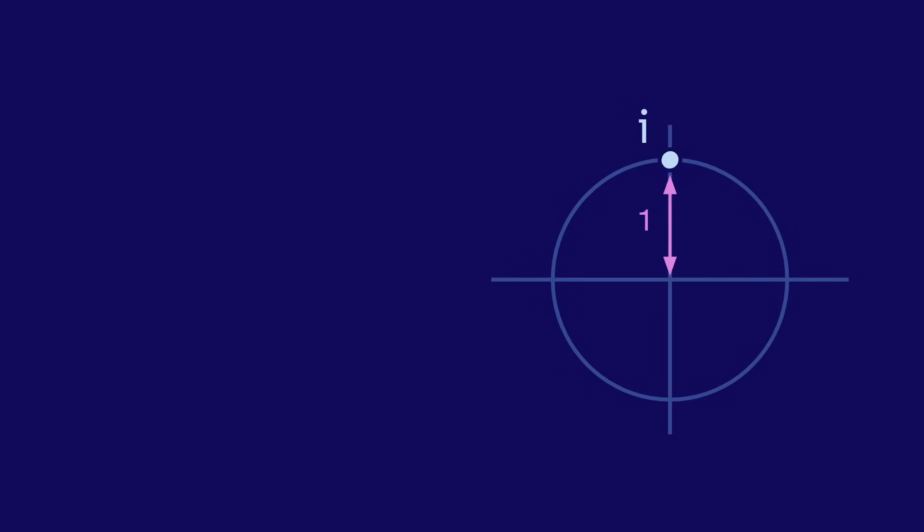I has radius 1, and on the first lap, it has angle pi over 2. So to calculate i to the i, we can replace the base with polar form, and then multiply, and we're left with e to the negative pi over 2, which is about 0.2.